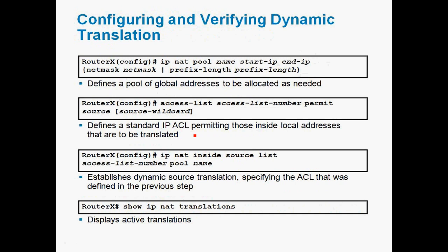For dynamic NAT translation, first go to the router global mode and enter: IP NAT pool [pool-name] [starting IP] [ending IP] netmask [netmask value]. This defines the pool of global IP addresses to be allocated as needed. When a pool is created, the private IP addresses are automatically translated into one of the IP addresses in that group.